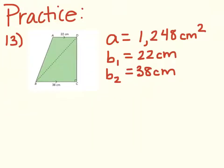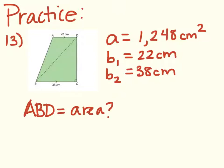Here is your final practice problem for chapter 10.2. The area of the green trapezoid shown here is 1,248 centimeters squared. B sub 1 is 22 centimeters and B sub 2 is 38 centimeters. Use the information you have available to calculate the area of triangle ABD, which has a base of 22 centimeters. Good luck! When I see you tomorrow, we'll do some more work on finding area of parallelograms and trapezoids. See you then!